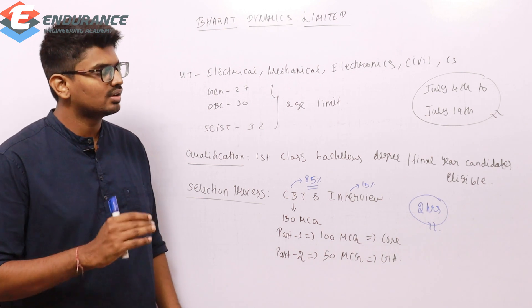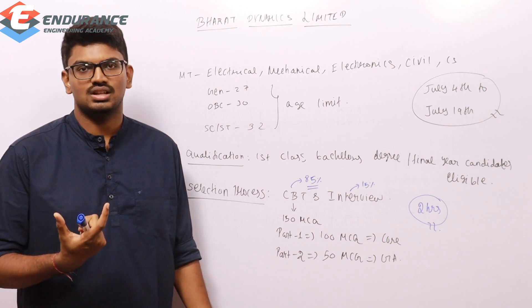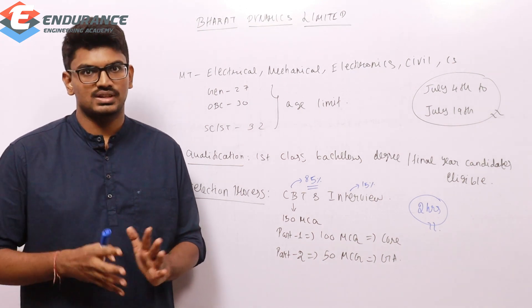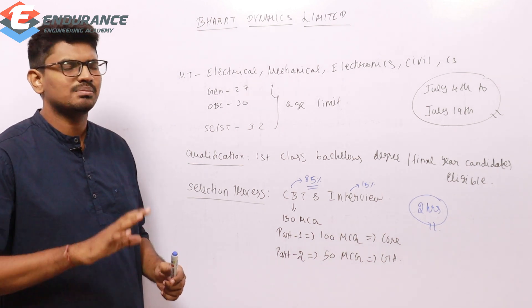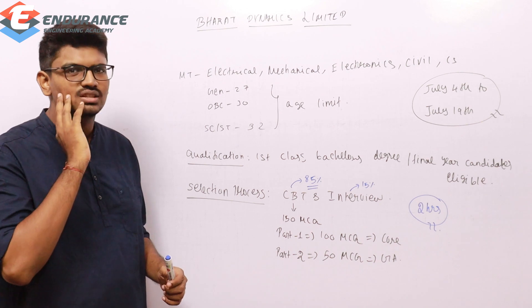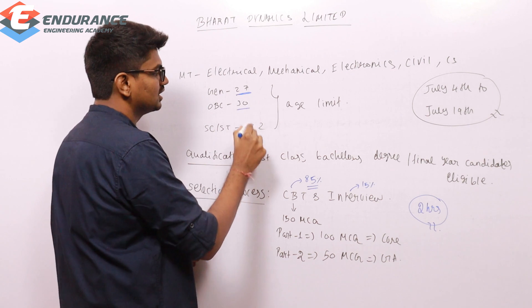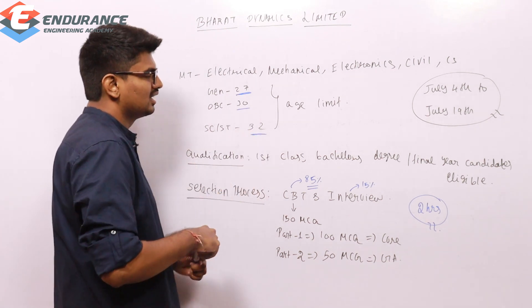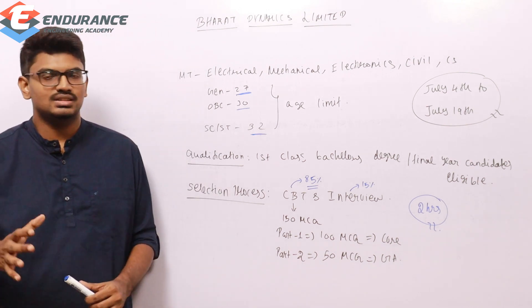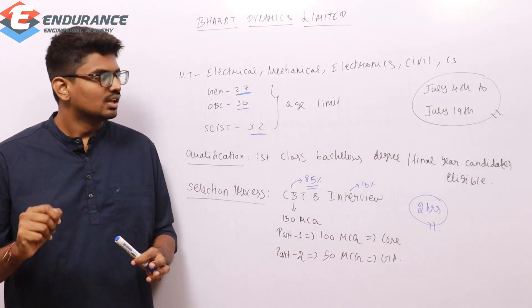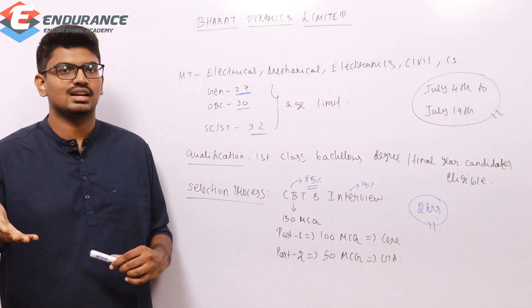Coming to the age limit, it's almost the same criteria as LMRC and TSPSC. General category is 27, OBC is 30, SC/ST is 32. There may be some relaxations depending on conditions you can go through in the notification, but this is the basic age criteria. If you are falling under 27 in general category, that's the maximum age.